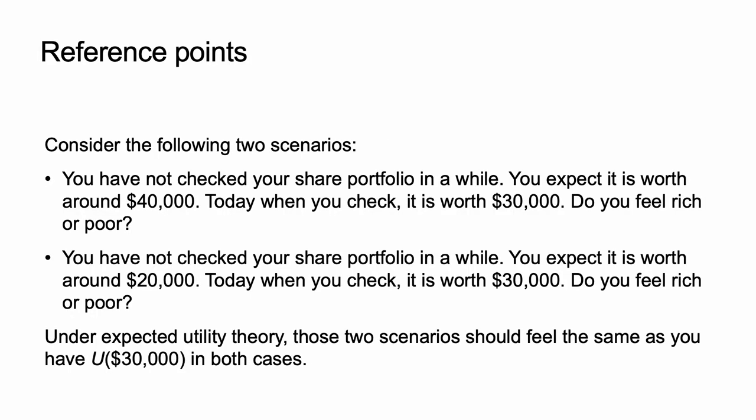An auxiliary axiom of expected utility theory is that people use a reference point of zero wealth — they consider the utility of the absolute outcomes. However, consider the following two scenarios.